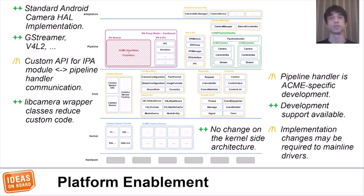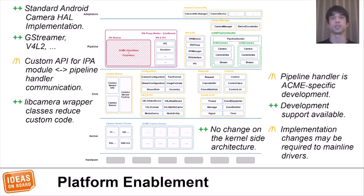There are also a bunch of helper classes that should ease the development of pipeline handlers, such as for I/O, configuration, managing camera sensors, and managing V4L2 devices. Vendors also do not have to worry about GStreamer or Android support at all, since the adaptation layers included in LibCamera already handle that.